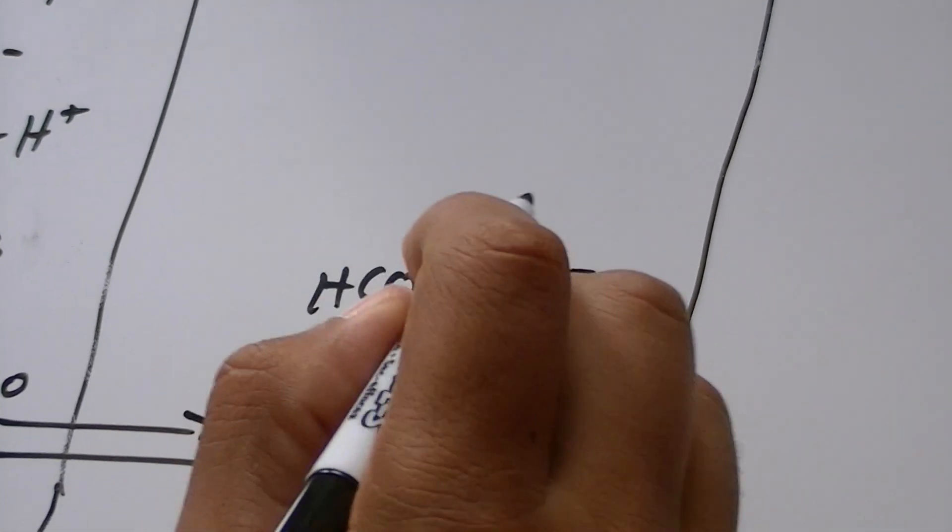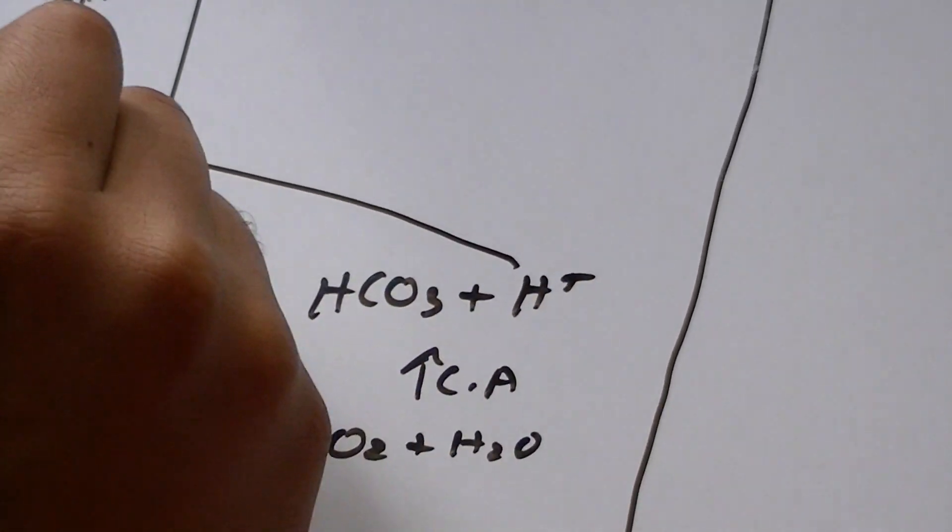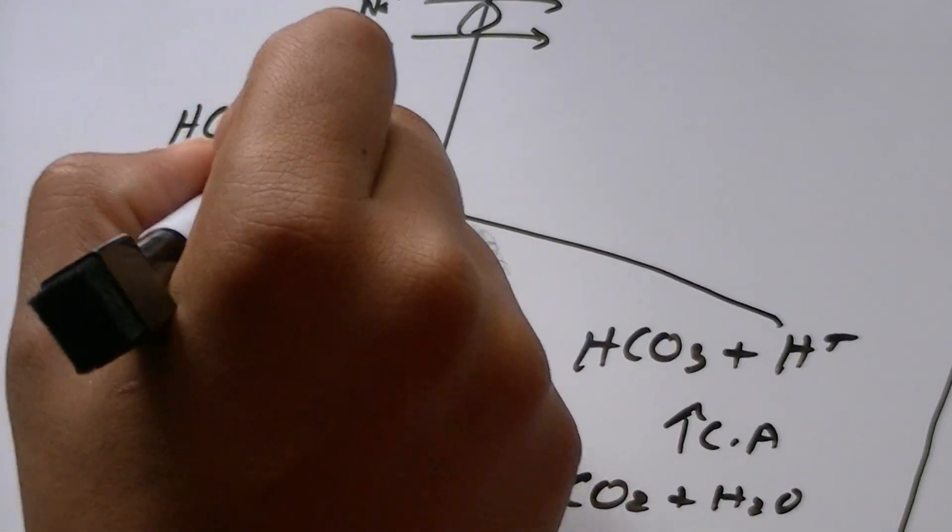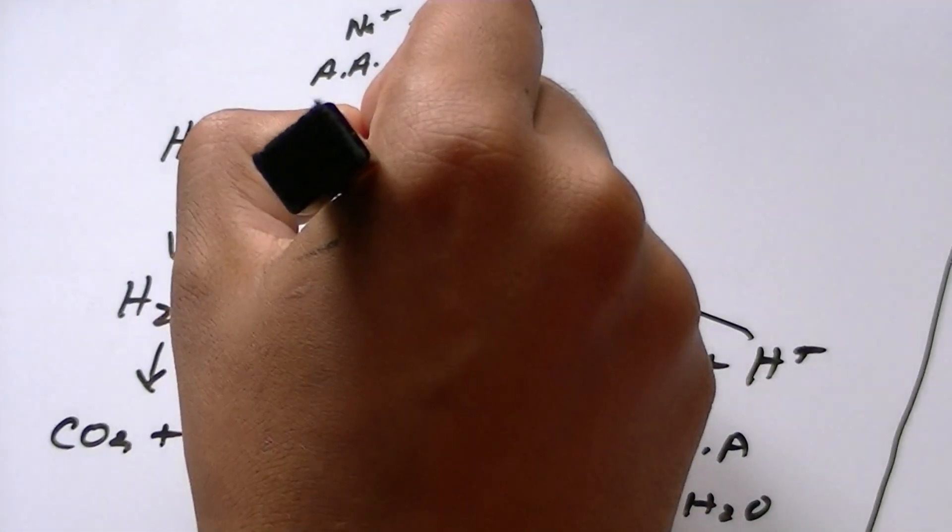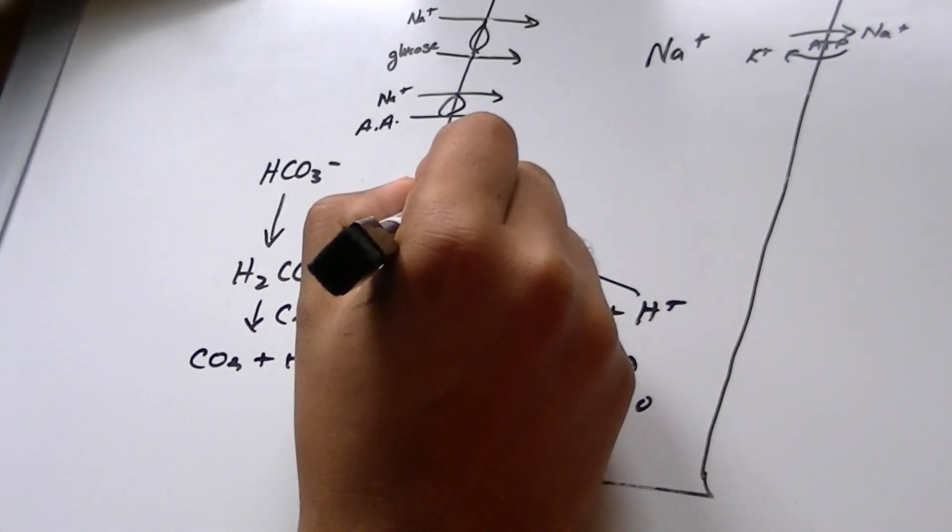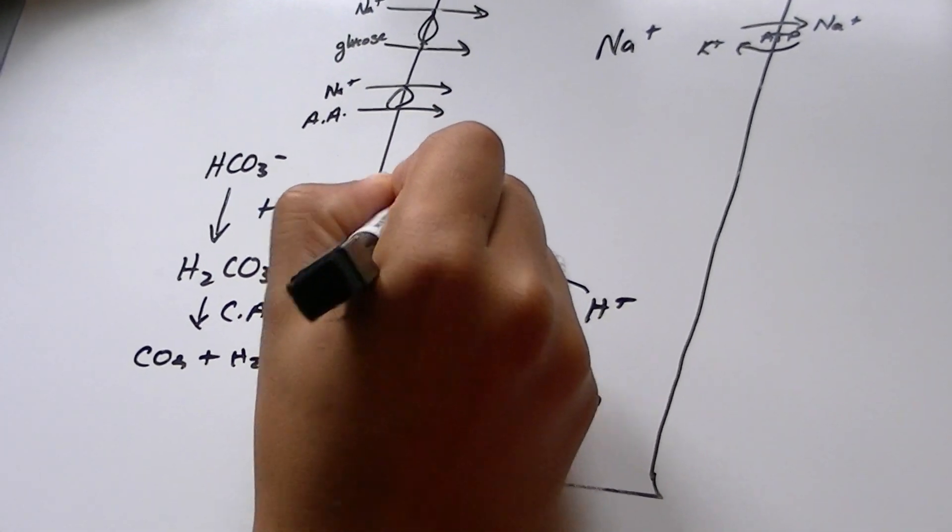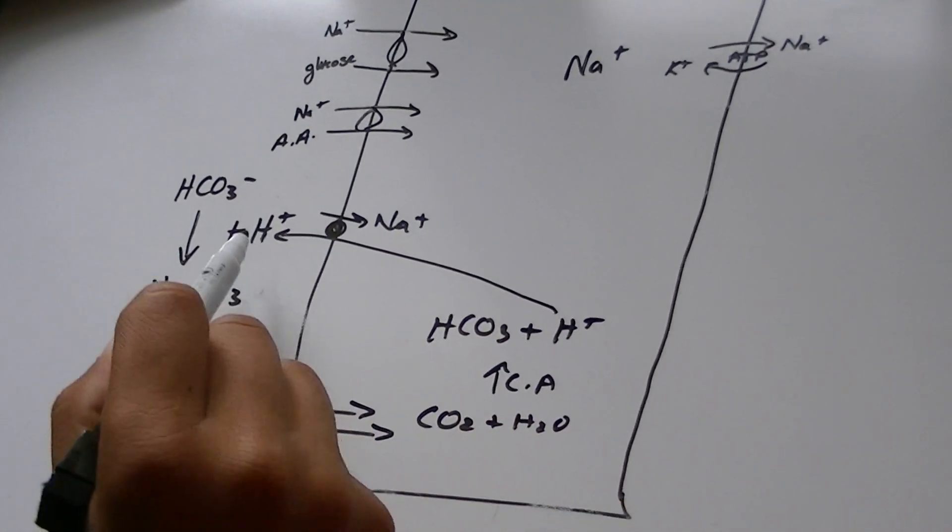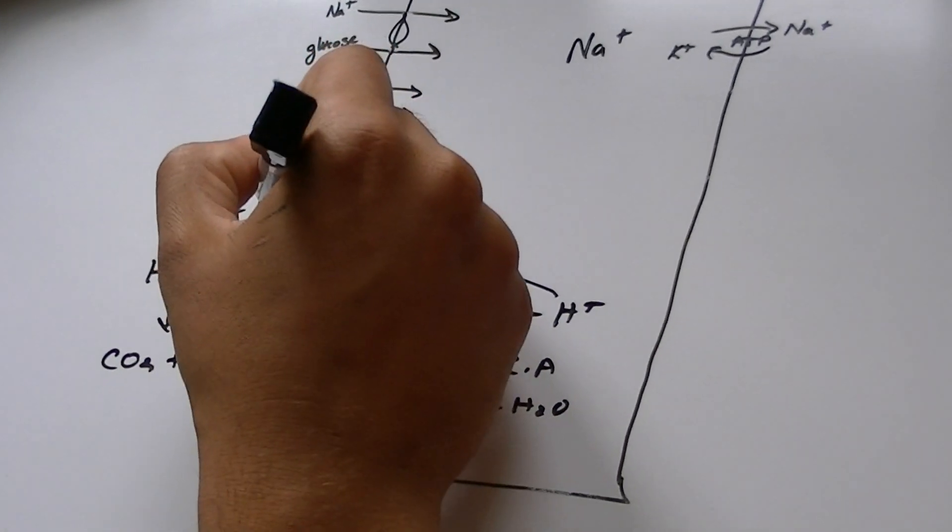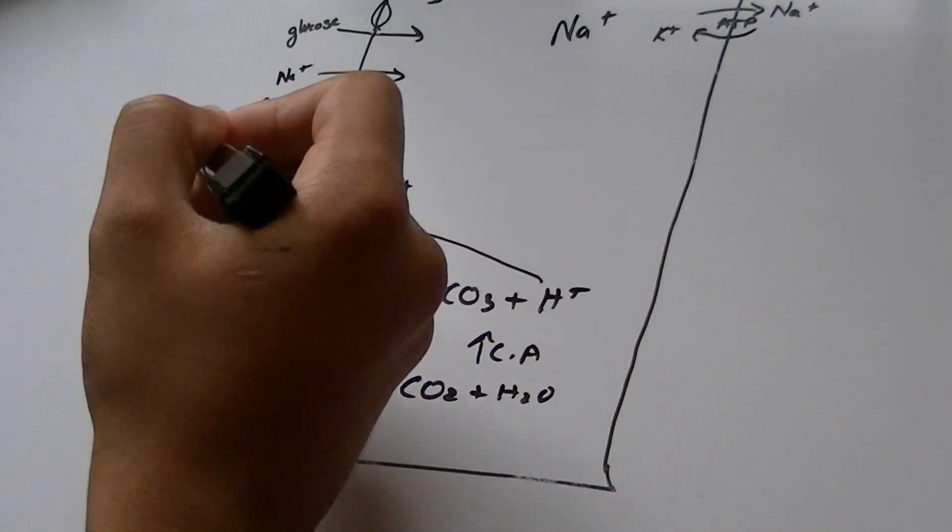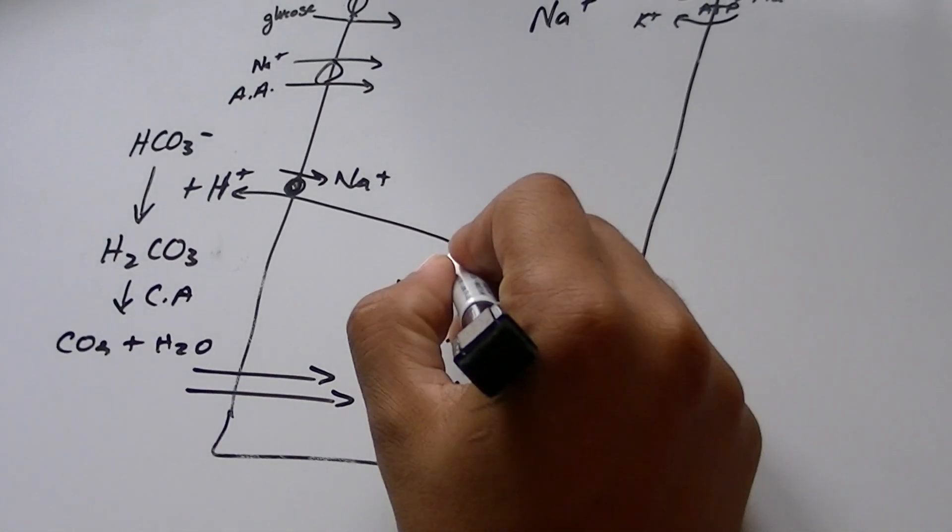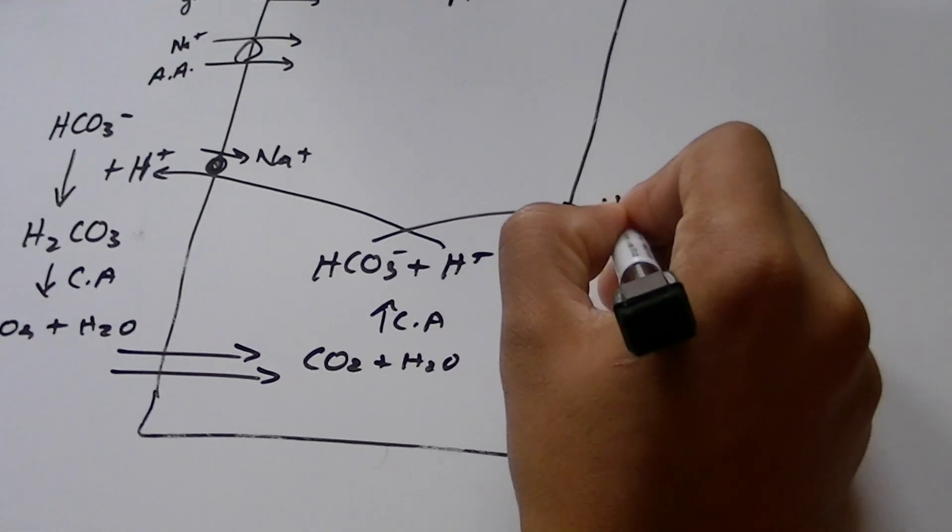Now, this same hydrogen is the one that we used over here. This same hydrogen is transported out into the lumen using an antiporter in which sodium is reabsorbed into it. Now, this is very important because this causes hydrogen to go out into the lumen and cause absorption of bicarbonate, and this bicarbonate is sent into the blood.